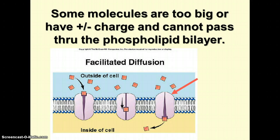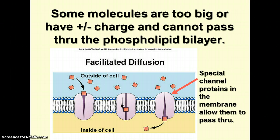Some molecules are too big or too strongly charged and can't pass through the phospholipid bilayer. Some small ones like water and oxygen can just slip right between the phospholipids and the layer. But others are too big or charged and they can't pass through the phospholipid bilayer, so there is such a thing as facilitated diffusion.